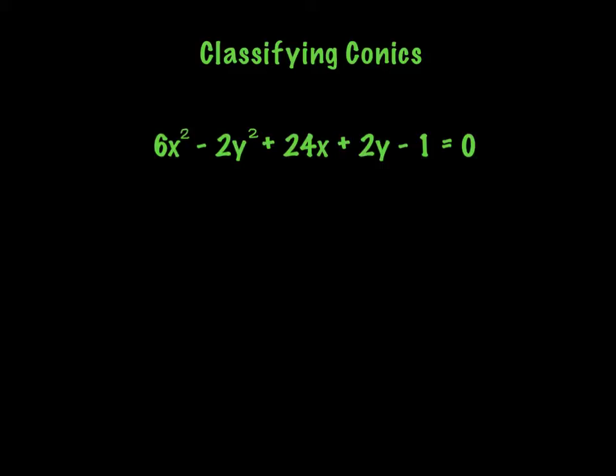Hey, so very quick video today. We're just going to talk about classifying conics. There is a formula that we can learn — a discriminant for conics — because they are considered second degree. But we just want you to be able to basically identify them pretty quickly. I'm going to tell you what I look for when identifying conics, and the first thing I look for is how many squared terms there are.